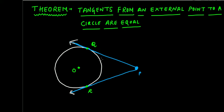Now what do we need to prove? We need to prove that PQ length is equal to PR length. That's what we need to prove, because the length of the tangents are equal.